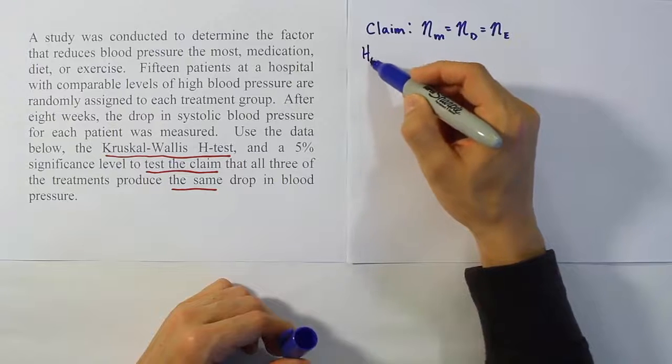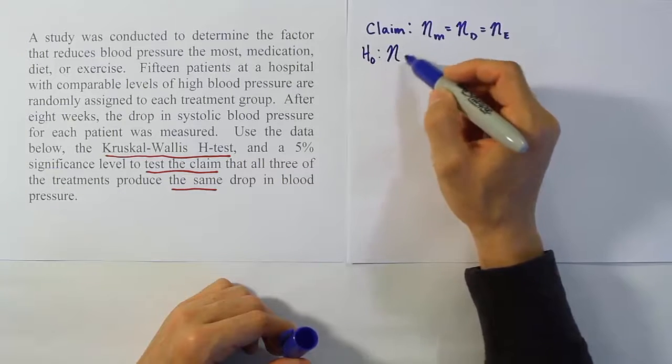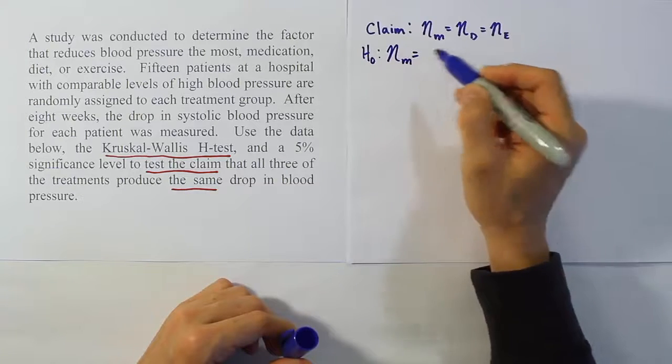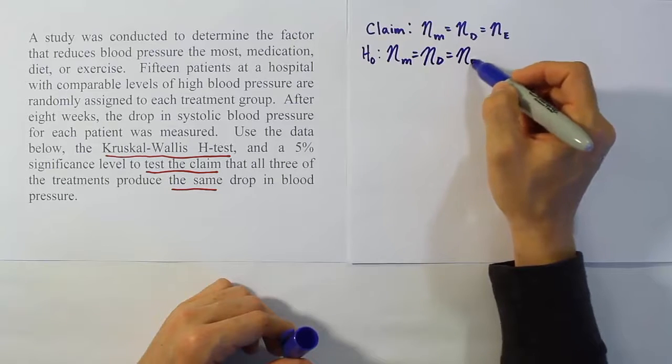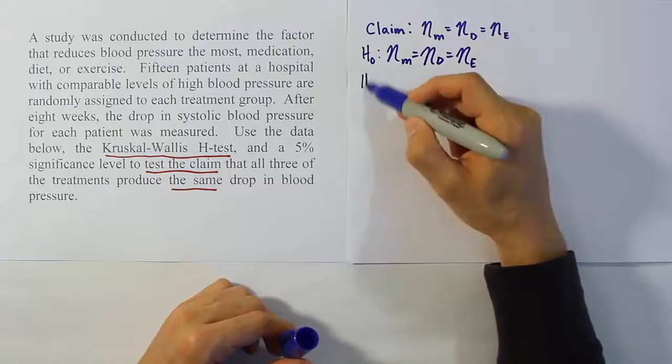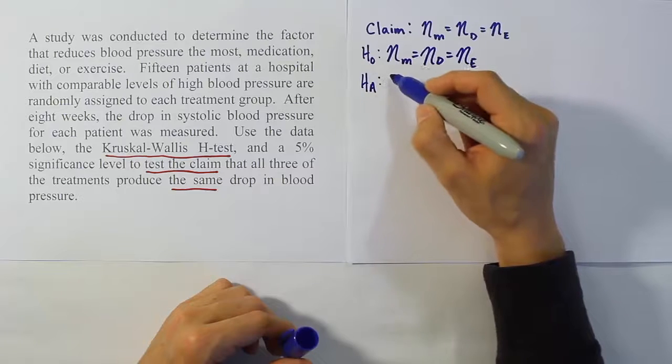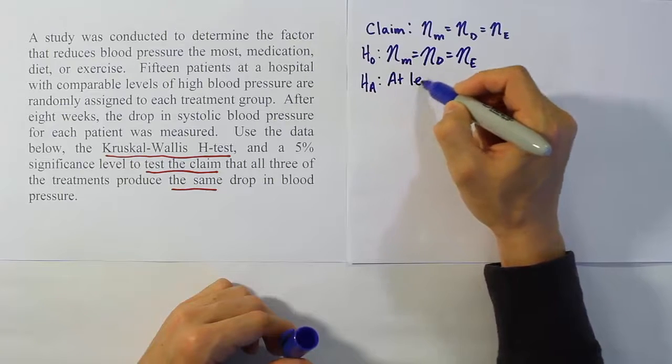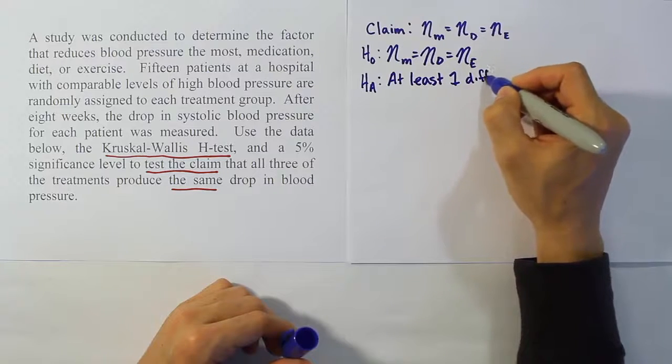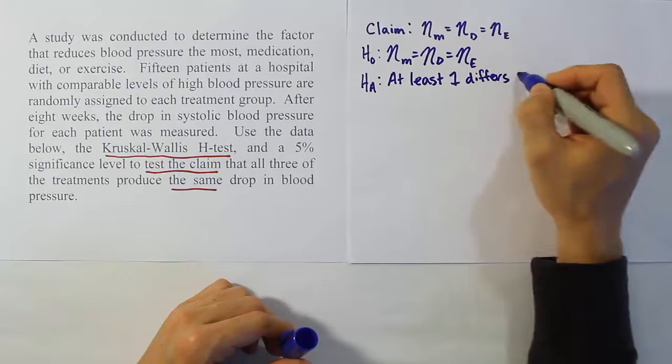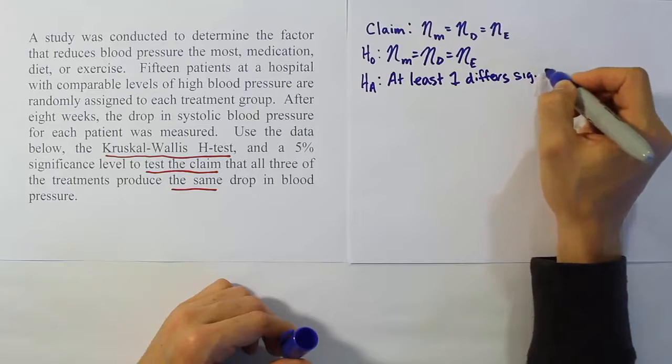From there, what we want to do is express H0 and HA. H0 is the same as the claim here. It always expresses the claim of equality. So in this case, it's this.